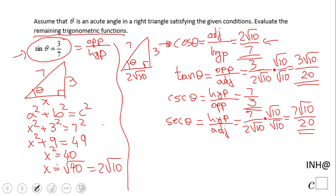The last one is cotangent of theta, which is the reciprocal of tangent. It's adjacent over opposite. In this case we flip to get 2 square root of 10 over 3.